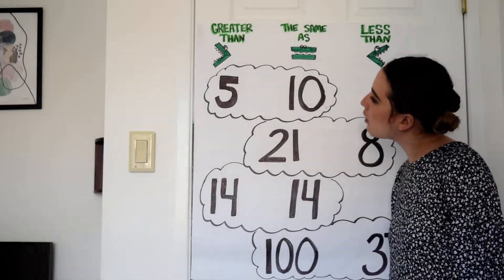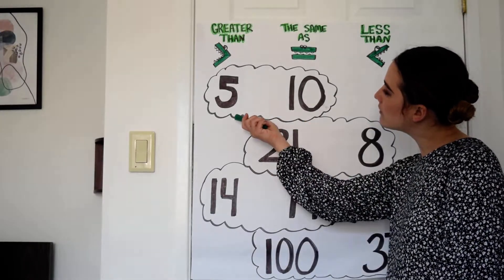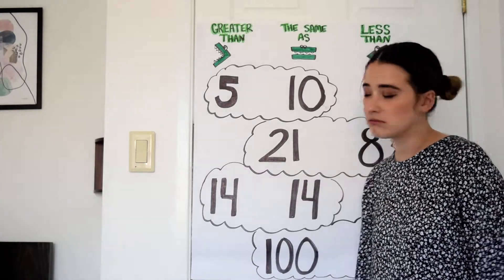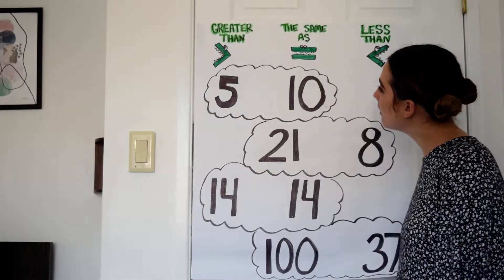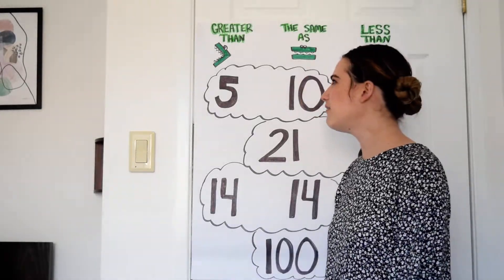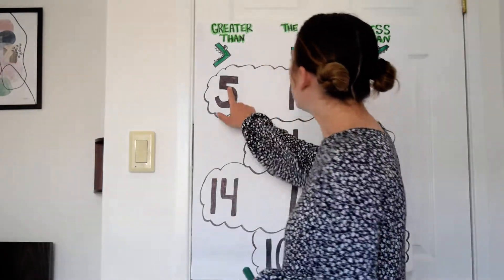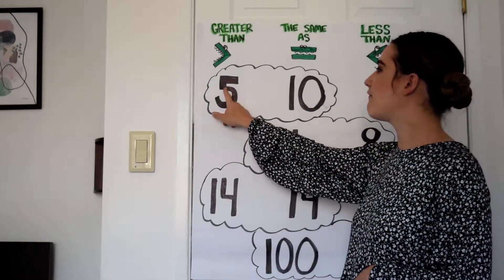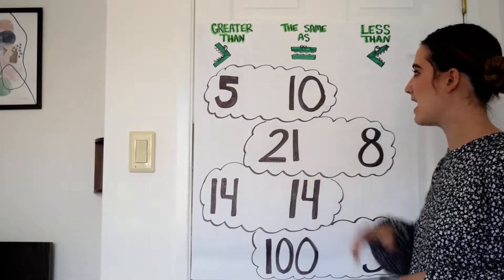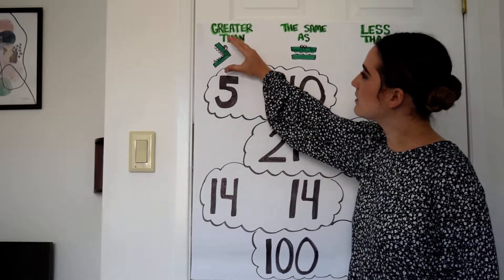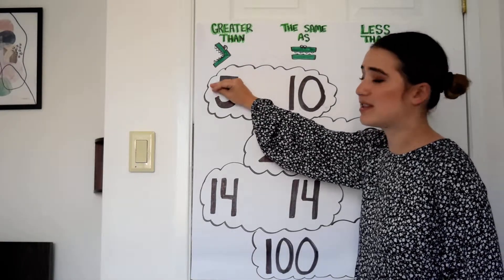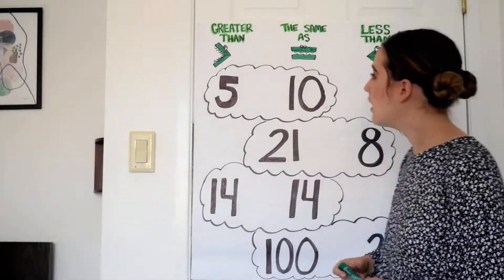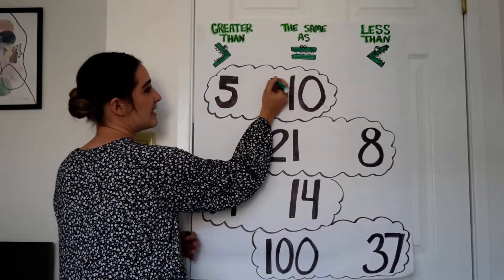Here's my first example. We have the number five and the number ten. Which number is greater? Is five greater than ten? No — ten is actually greater than five. So to make this a true number sentence we need to say that five is less than ten. If I use the greater than symbol he's going to be munching towards the five, but the five is not the biggest number. We need the one that's munching towards the ten — the less than symbol.